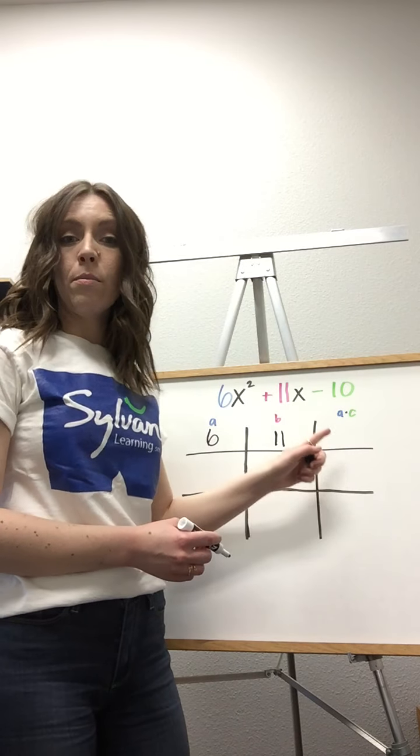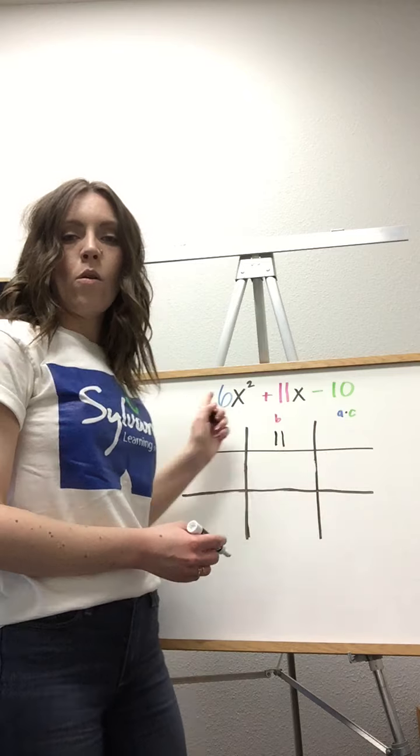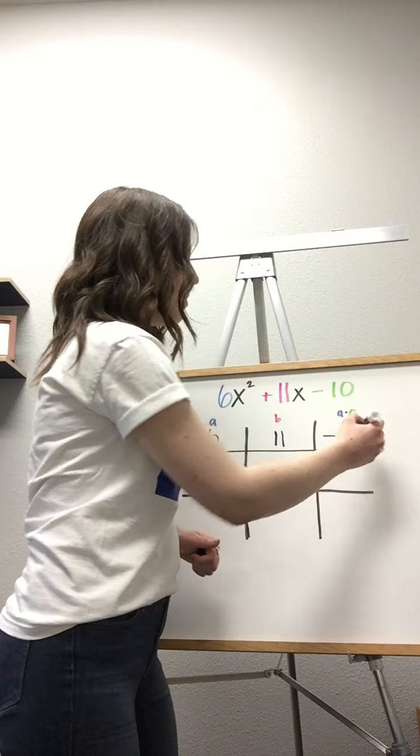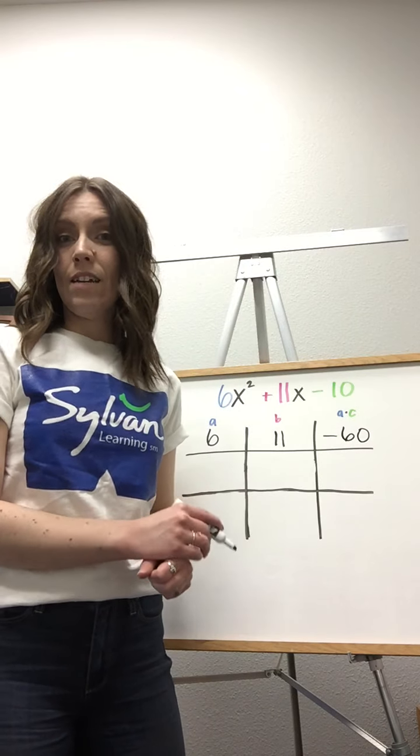And our third column will be the product of a and c, or our first and last number. In this case, 6 times negative 10 gives us negative 60.